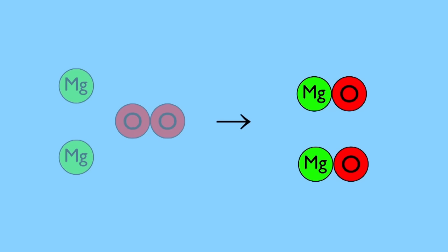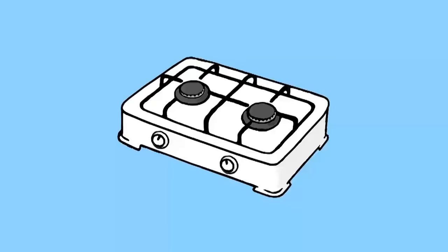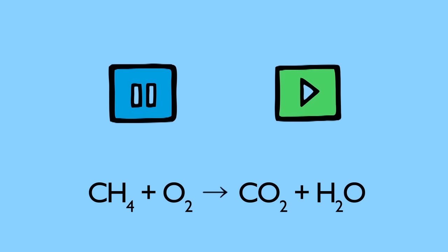Here is another example: a reaction you'll see every time you use a gas cooker, which uses natural gas. But is this reaction balanced? Pause the video and count the carbon, hydrogen, and oxygen atoms on each side.